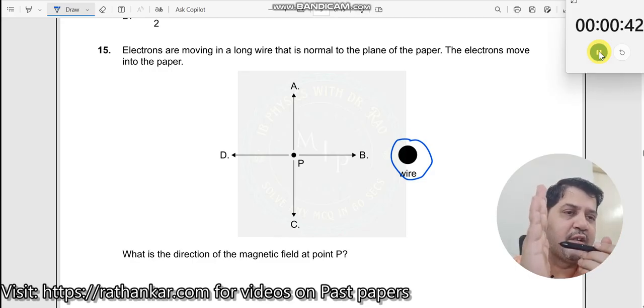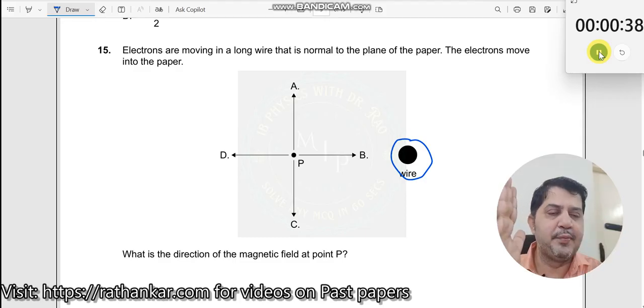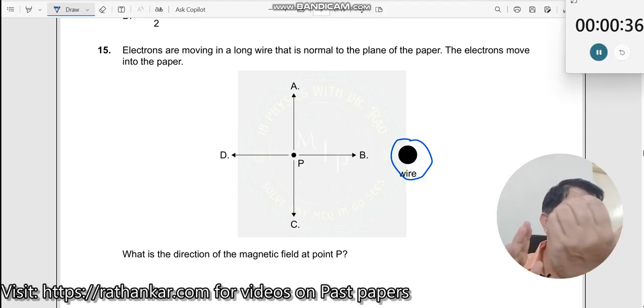If electrons are moving inside, how do the positive charges move? Positive charges move in the opposite direction. It moves in the opposite direction. So, therefore, now it should be like this.